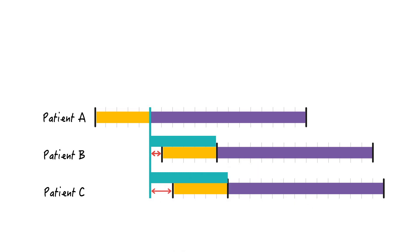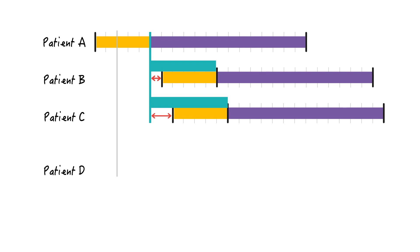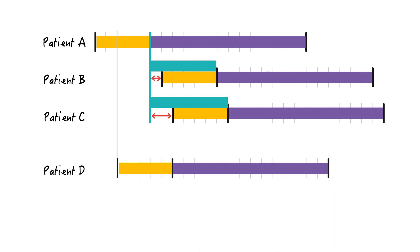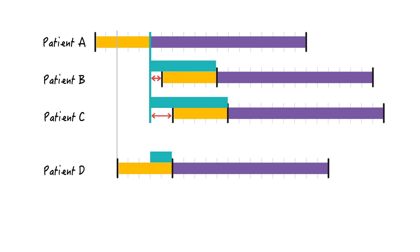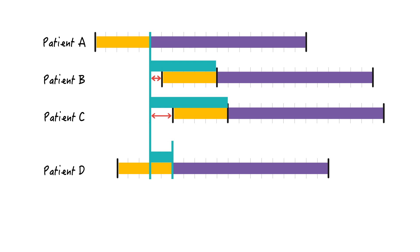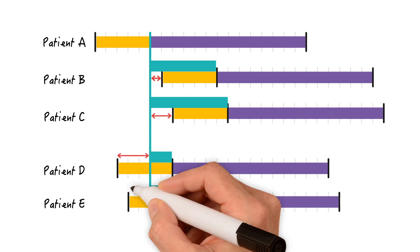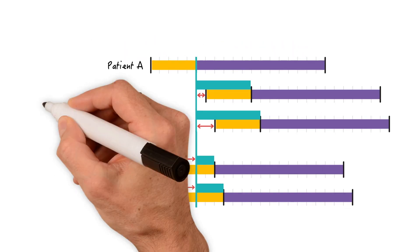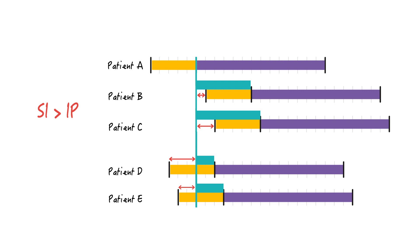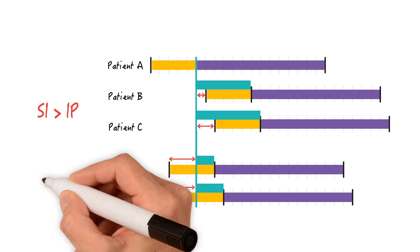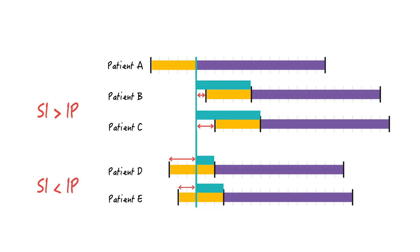Now let's look at what happens in a fictitious disease where patients are infectious in the pre-symptomatic period. Using patient A again as the infector, patient D is infected and after 5 days develops symptoms — and this is his serial interval. Similarly for patient E. You see that in patients D and E, the serial intervals are shorter than the incubation period. So when the serial interval is longer than the incubation period, infection occurs primarily after symptom onset, and when the serial interval is shorter than the incubation period, infection occurs primarily before symptom onset.